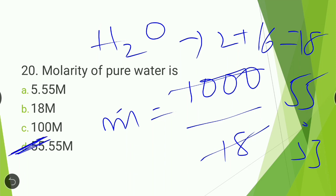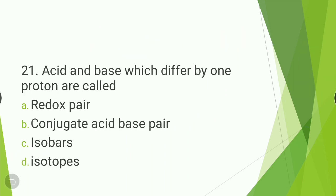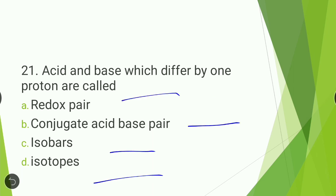Next question: an acid and base which differ by one proton are called — redox pair, conjugate acid-base pair, isobars, or isotopes? The answer is conjugate acid-base pair. When an acid and base differ by one proton, they form a conjugate acid-base pair.